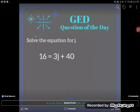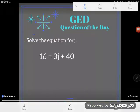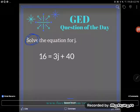Get out my pen. Solve the equation for J. And what they mean when they say solve the equation for J is they want you to isolate J or get that letter alone on one side of the equal sign.